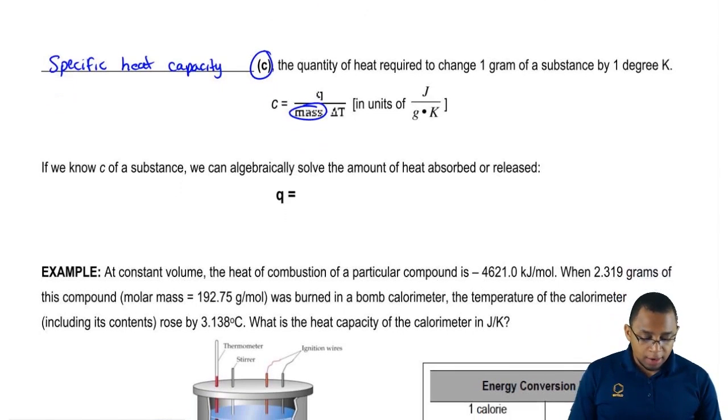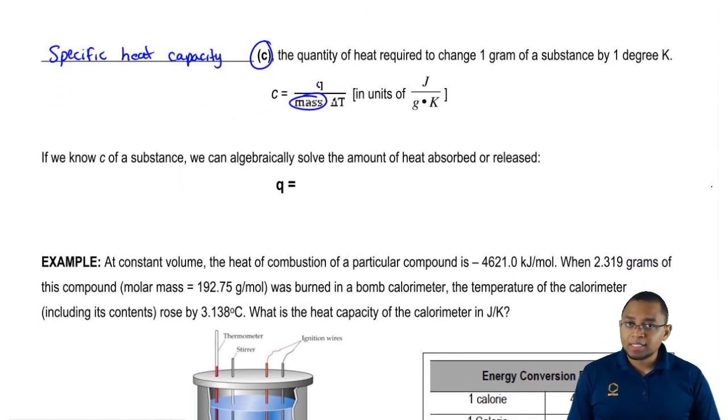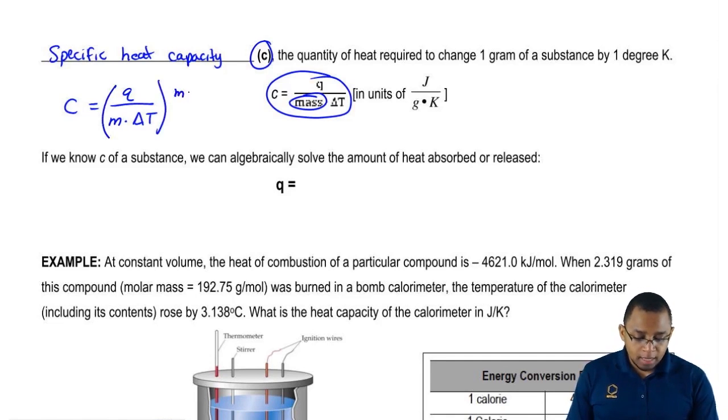What we're going to say here is if we know the specific heat capacity of a substance, we can rearrange this formula here so that we can solve for the amount of heat absorbed or released. If we want to rearrange this equation, so c equals q over m times the change in temperature, just multiply both sides by mass times the change in temperature.